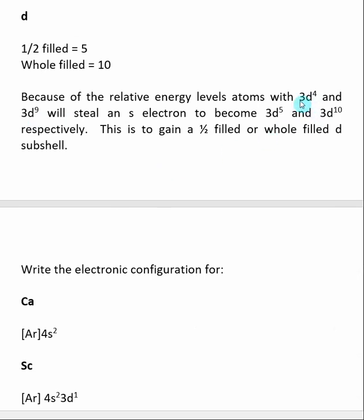And the reason why is 3D4 is one electron away from being half-filled and 3D9 is one electron away from being wholly filled. And they want that stability of being either half or whole-filled so much that they will actually steal an S-electron. So they will steal one of the four S-electrons to become 3D5 or, in the other case, 3D10.